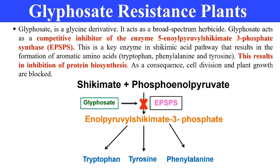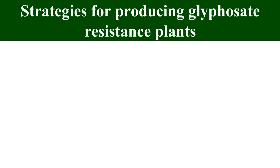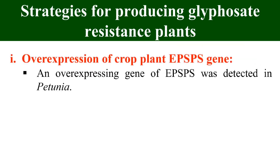That is the mechanism by which glyphosphate kills unwanted plants. Now, what strategies can we adopt for producing glyphosphate-resistant plants? The first strategy is overproduction of the target protein. Here we can overproduce the target enzyme, which is EPSPS. If we increase the copies of this EPSPS enzyme, we will have enough enzyme that after attack by glyphosphate we still have enough to carry out normal functioning.